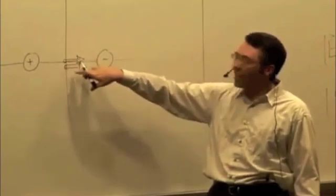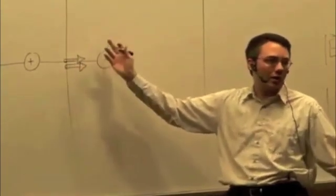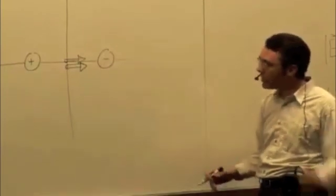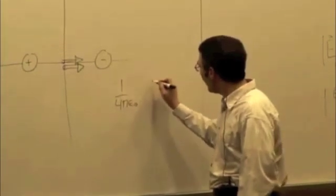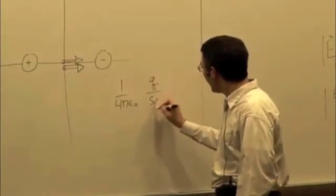And you know the field is going to be the same for each. So if you do it for one, you can just double it. It's the same distance and the same magnitude of charge. So what is that magnitude? It's 1 over 4 pi epsilon 0, Q over S over 2 squared.